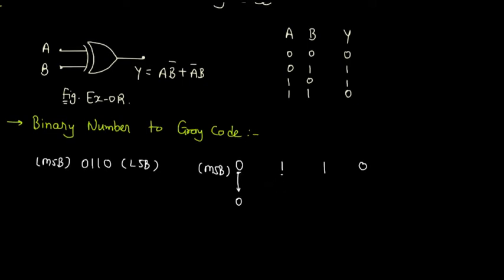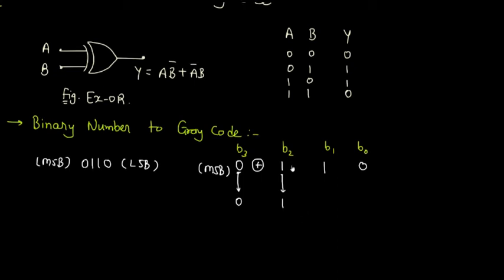Then use the XOR gate between the most significant bit and the next bit. If we label the bits as bit 0, bit 1, bit 2, and bit 3, then use XOR between bit 2 and bit 3. Both inputs are different, so we get output 1. For the next bit, use XOR between bit 1 and bit 2 — both inputs are different, so we get output 1.